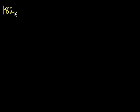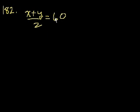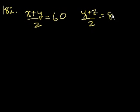Problem 182. If the average arithmetic mean of x and y is 60, essentially x plus y over 2 equals 60, and the average of y and z is 80, so y plus z over 2 equals 80, what is the value of z minus x?